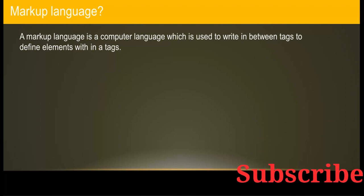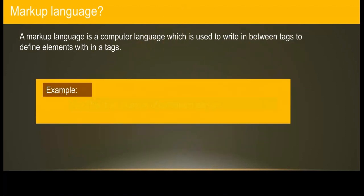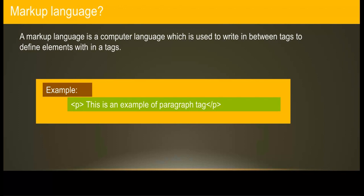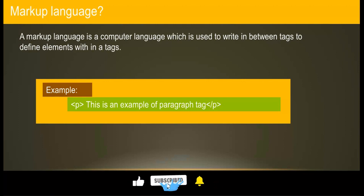If you are new to this course you may not understand that directly, so let me give you an example. This is an example of a paragraph tag — in between the less-than and greater-than symbols we include the letter 'p', called an element. In HTML we call it an element. This 'p' element refers to the paragraph tag. Whatever content we use in our daily life in paragraph format, if we want to write it in the browser we need to include that content in between the paragraph tags.